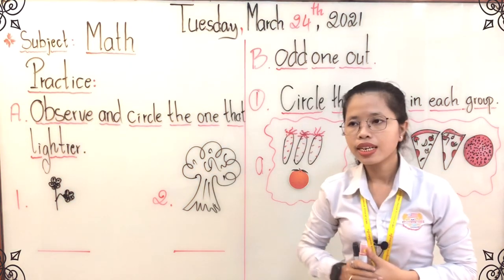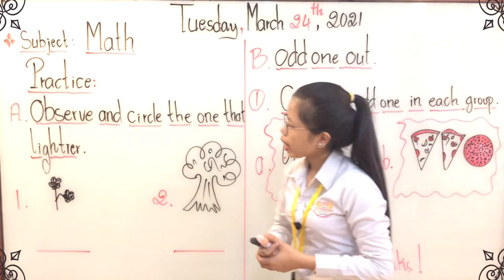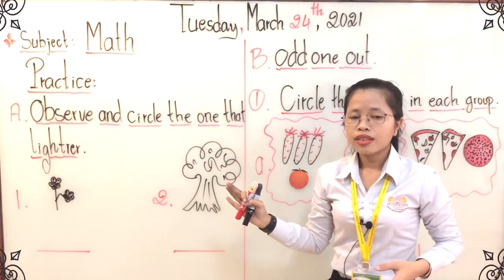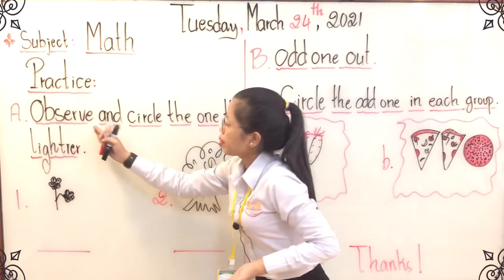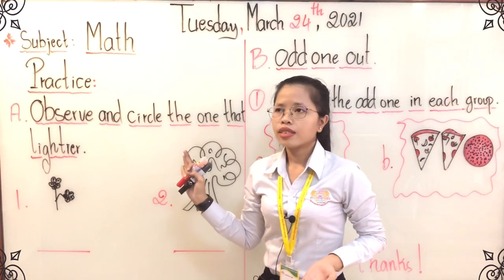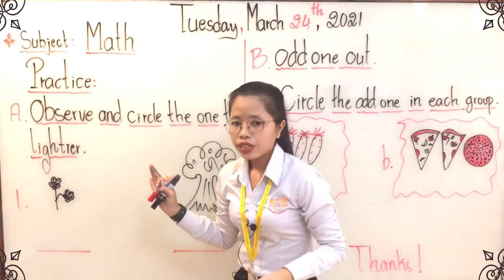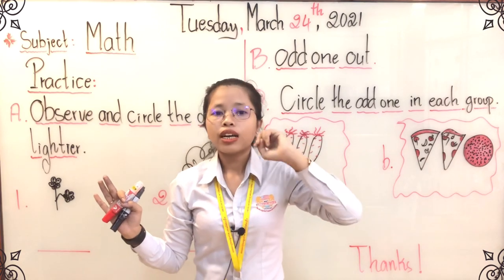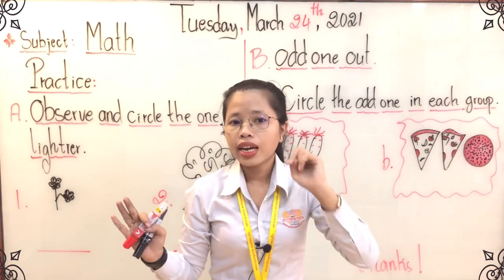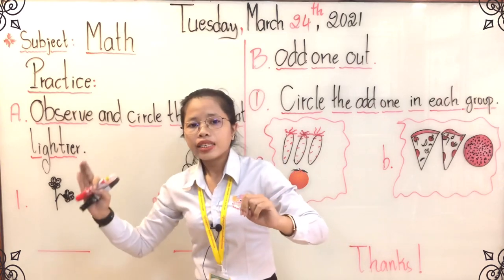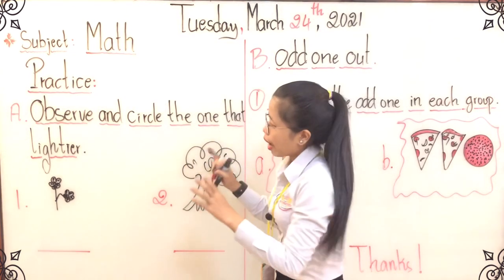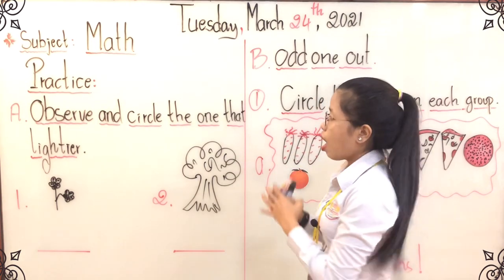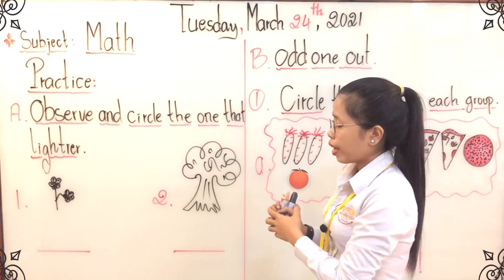We are going to see one activity that we have practiced last week already. And about the activities, also observe and circle the one that is lighter. So like we have studied already regarding last week's activities, we have done two activities — one is observe and circle the one that is lighter. And today we are going to continue with the same activity: observe and circle the one that is lighter.